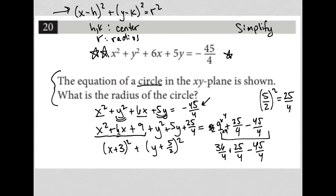30 plus 20 is 50, 6 plus 5 is 11, so that becomes 61/4. So this becomes 61/4 - 45/4. 61 minus 45, 60 minus 45 would be 15, so 61 minus 45 would be 16. This becomes 16/4.